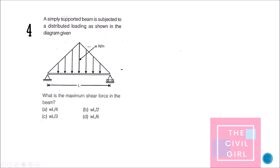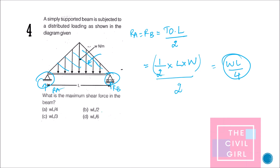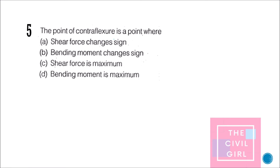Next question: a simply supported beam is subjected to a distributed loading — what is the maximum shear force? As established, for a simply supported beam the maximum shear force acts at the ends. The loading is symmetrical, so Ra = Rb = total load / 2. That value is the maximum shear force, and the answer is option A.